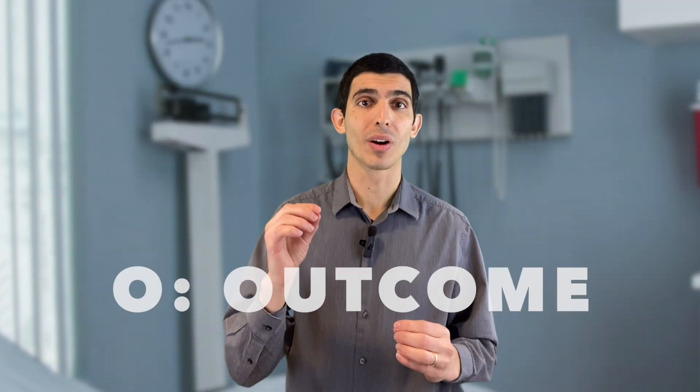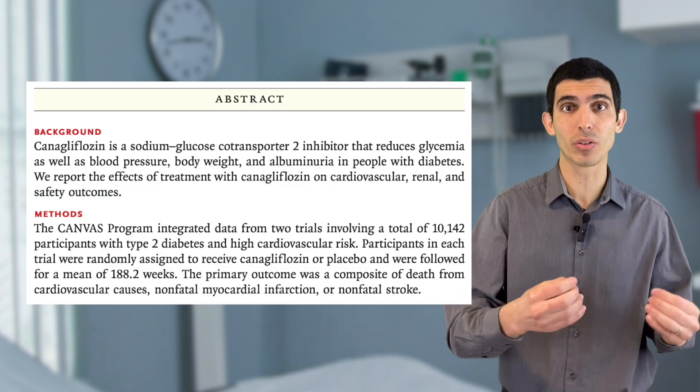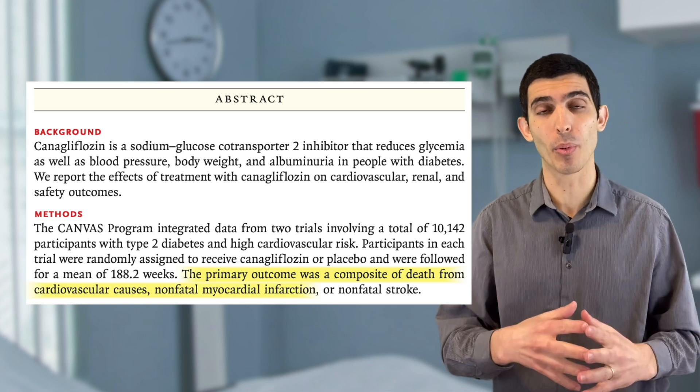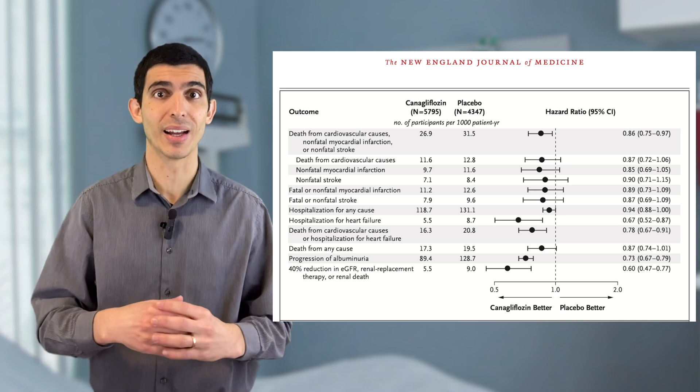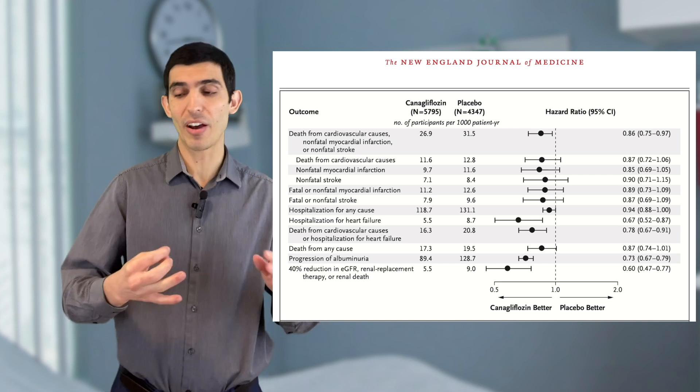Next is the letter O — O is for outcome. In a randomized trial or cohort study, you generally have many different outcomes. If you're getting a quick sense of the paper, focus on the primary outcome and a few important secondary outcomes. In the Canvas trial, the primary endpoint was the composite outcome of death, stroke, or myocardial infarction. Table 3 of the trial also shows many secondary outcomes including hospitalization, death, myocardial infarction, and progression of albuminuria.